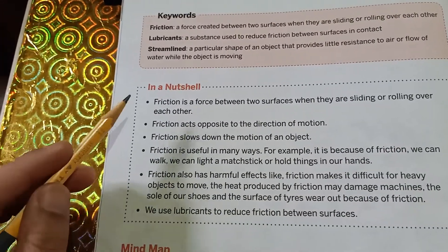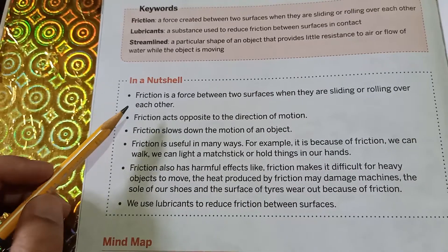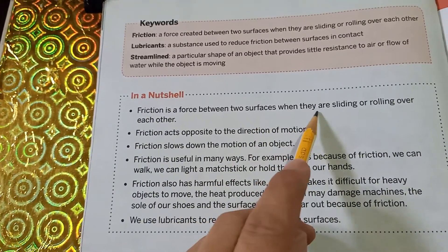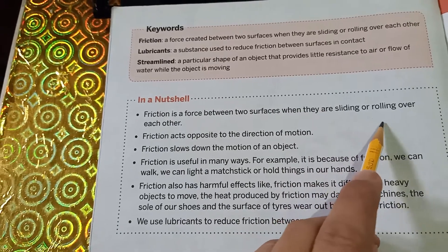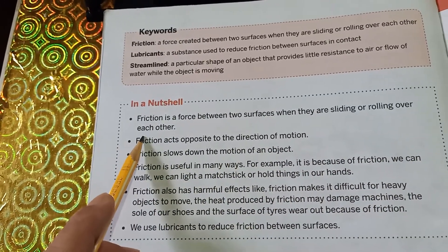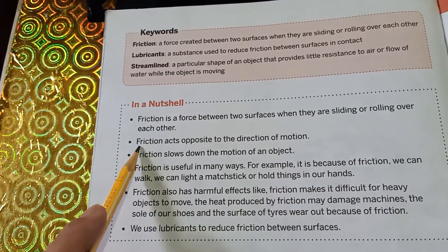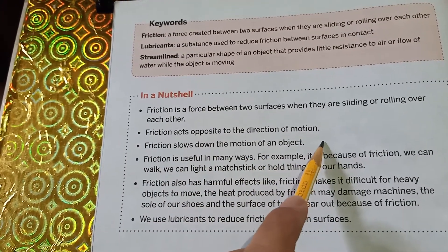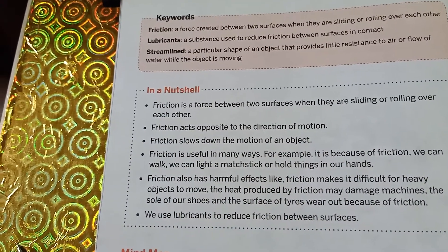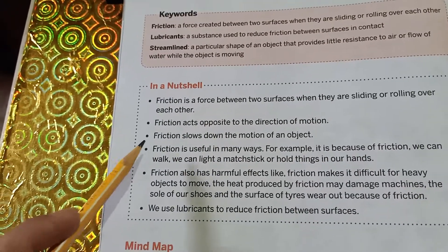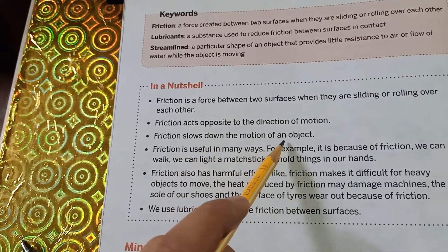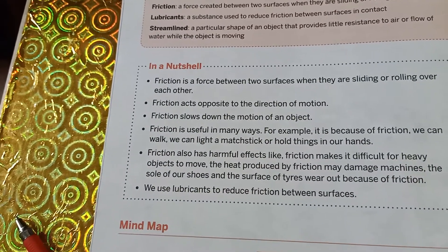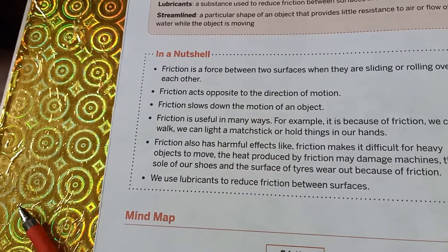So, what is friction? Friction is a force between two surfaces when they are sliding or rolling over each other. Friction acts opposite to the direction of motion. This means friction reduces motion — it slows down the motion of an object and finally it can bring any moving object to rest.